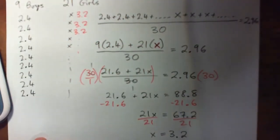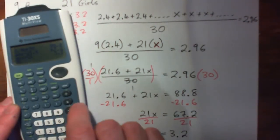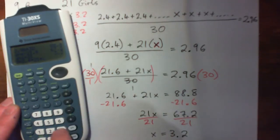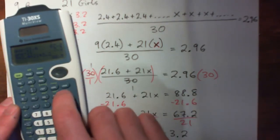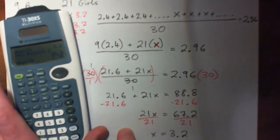Okay, so the girls' GPA is 3.2. I'll maybe just check that on the calculator. 9 times 2.4 plus 21 times 3.2, and then when I divide that by 30 kids, I get 2.96. Yep, so that works.